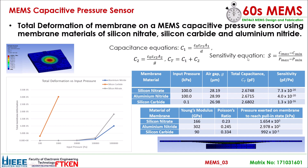Lastly, the maximum pressure for the membrane to reach pull-in state varies between three different membrane materials, as seen in this table, with the cross-sectional image of the membrane touching the upper electrode depicted in this figure.